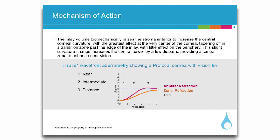Zone 2, intermediate vision, occurs at about 1 to 3 millimeters from the center. And in Zone 3, 3 millimeters and beyond, distance vision — the refractive power returns to baseline.